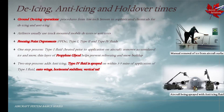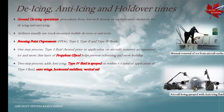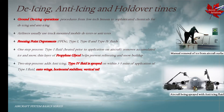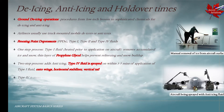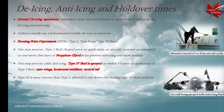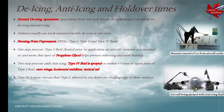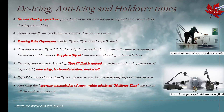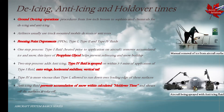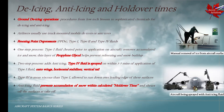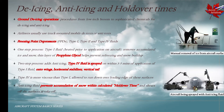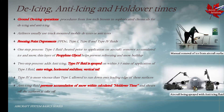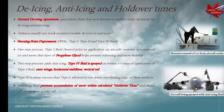A two-step process adds anti-icing, wherein Type 4 fluid is sprayed on the aircraft within 3 to 5 minutes of application of Type 1 fluid. It is applied onto the wings, the horizontal stabilizer, and the vertical tail. Type 4 fluid is more viscous than Type 1 and is allowed to run over the leading edges of these surfaces. The anti-icing fluid prevents accumulation of snow within the calculated holdover time or effectivity of the fluid applied. The anti-icing fluid would shear off the aircraft surfaces during take-off. If the holdover time is exceeded while the aircraft waits for take-off, the aircraft would have to be de-iced all over again, which is why holdover times are important.